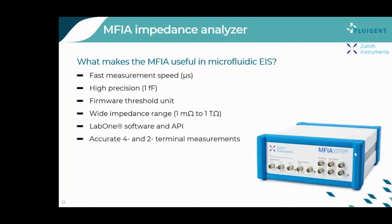Another of our instruments, the MFIA impedance analyzer, is also a great fit for microfluidic applications. The MFIA can measure the impedance very fast, allowing the passing analyte to be measured on the microsecond time scale. In addition to its high impedance accuracy, the MFIA can also measure over a very wide impedance range, from 1 ohm all the way up to 1 teraohm. It is very precise, so you can resolve even very tiny changes in the dielectric signal. It also includes a four-wire threshold unit, which can be used to trigger an output sourcing voltage based on the measured signal.